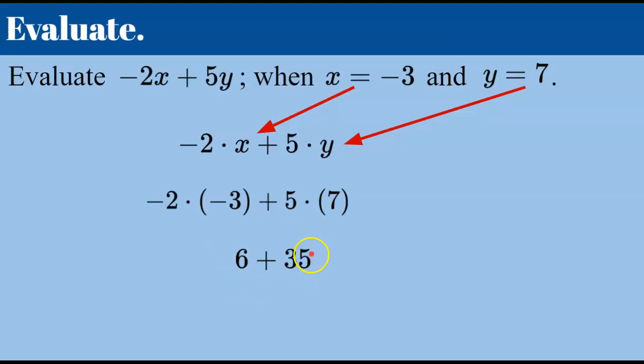6 add 35 is 41 and there we have it in simplest form. So we have evaluated this expression that has two different variables. We've been told what those two variables are equal to and we have 41.